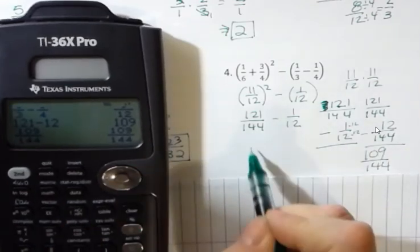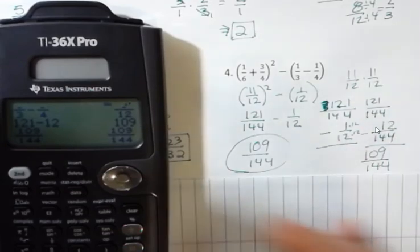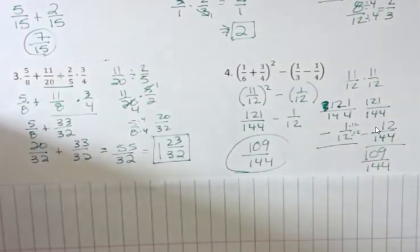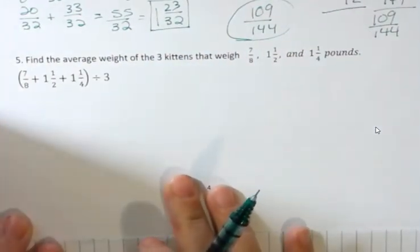So that's my final answer, 109 over 144. You see how I did a lot of work on paper, but I also used my calculator to help me, and that's how I want my students to be able to survive, is know the process, but also have calculator skills that allow you some flexibility there.